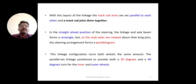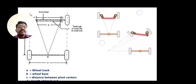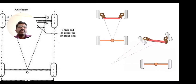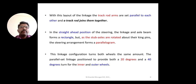In the layout of the above linkage, the track arms are set parallel to each other and joined to the track rod. In the straight-ahead position, the linkage and axle beam form a rectangular form. When the vehicle is turning, this arrangement becomes a parallelogram form. When a vehicle turns left or right, there is a change in the inner and outer wheel angles — the parallel linkage position provides 20 degrees for the inner wheel angle and 40 degrees for the outer wheel turning angle.